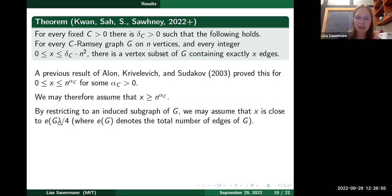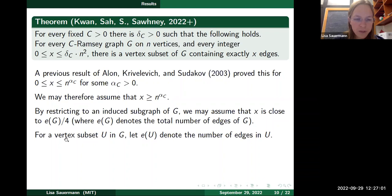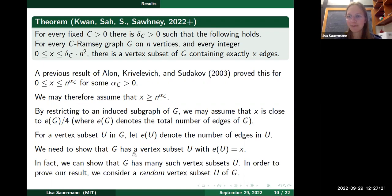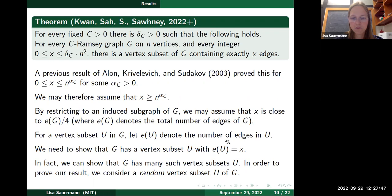For a vertex subset U, let e(U) denote the number of edges in U. We need to show that g has a vertex subset U with e(U) equal to x. The way we approach this — and that's why I'm talking about this in the probability and statistics seminar — is that we use randomness: we show that g has many such vertex subsets U by showing that if we consider a uniformly random vertex subset U of g, then with reasonable probability it will have e(U) equal to x.